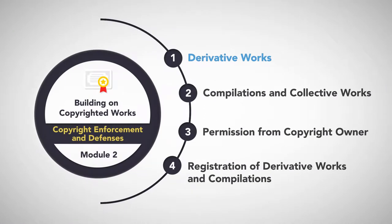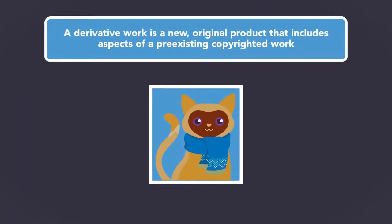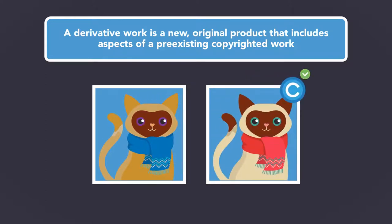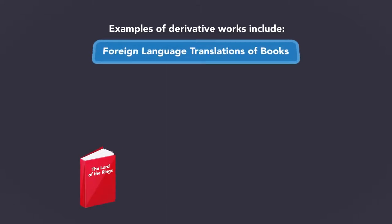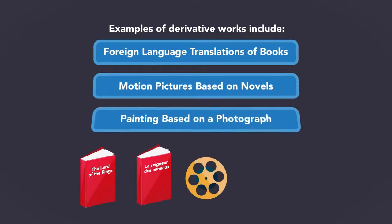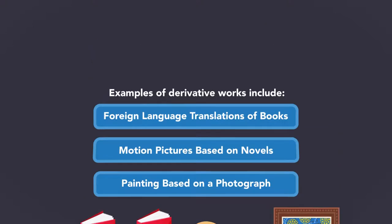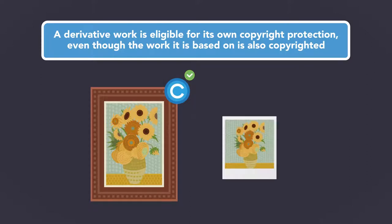Derivative Works. A derivative work is a new, original product that includes aspects of a pre-existing copyrighted work. Examples of derivative works include foreign language translation of books, motion pictures based on novels, and a painting based on a photograph. A derivative work is eligible for its own copyright protection, even though the work it is based on is also copyrighted.